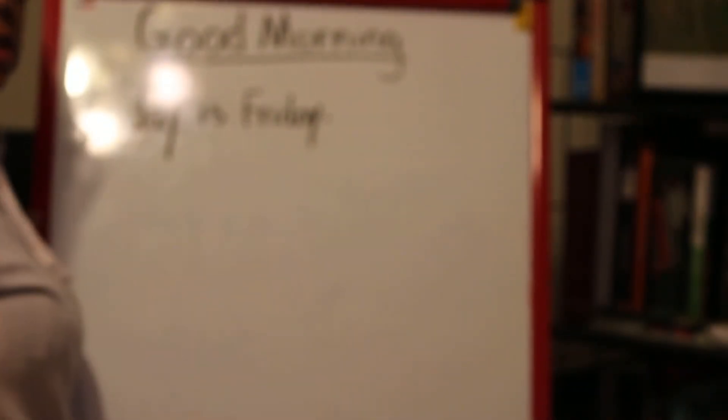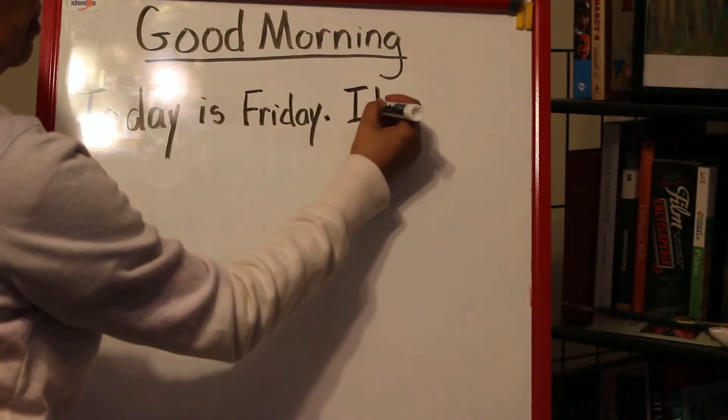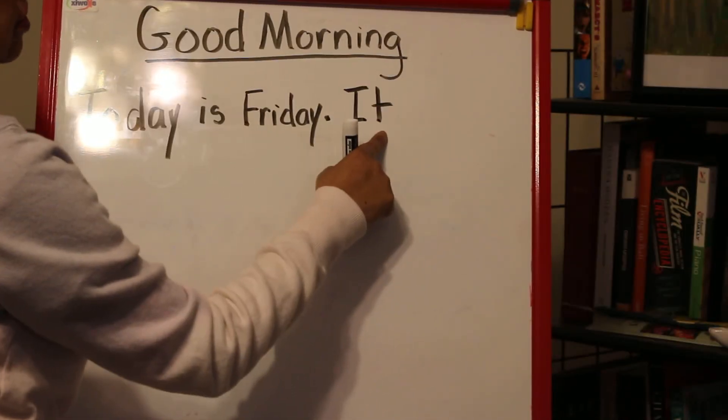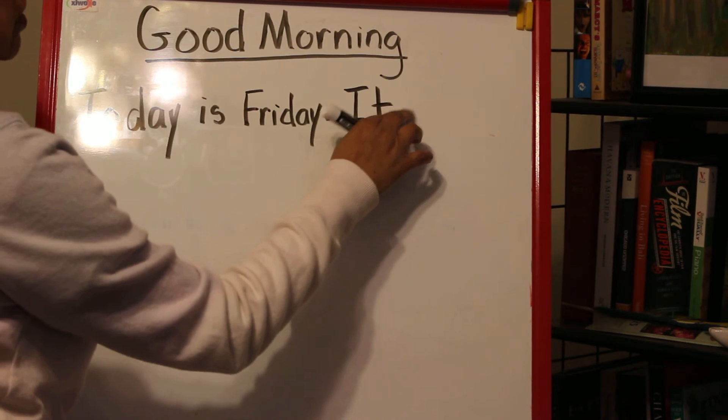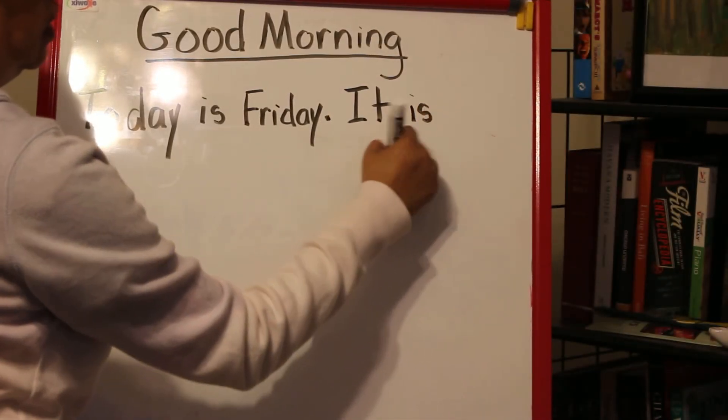We're starting a new sentence. Every sentence starts with what? A capital letter. It - two-finger space - is.